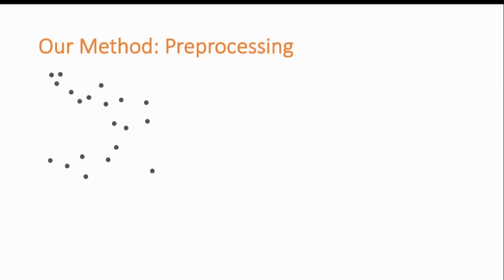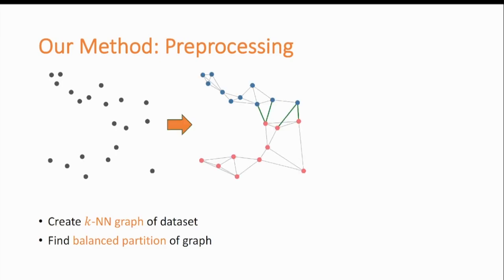In the pre-processing stage, we get a data set and build a k-nearest neighbor graph on the data set. Then, we find a balanced partitioning of this graph that cuts a small number of edges. For example, here, you can see the KNN graph of this data set partitioned into a blue part and a red part, and the cut edges are marked in green.